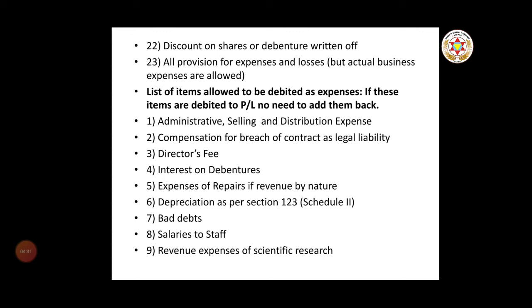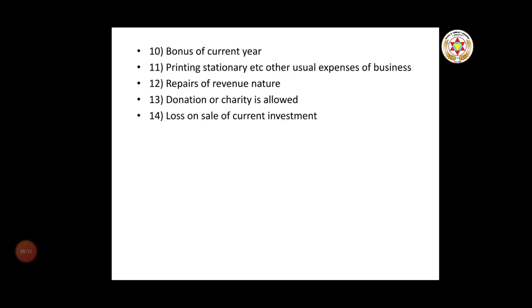Now the list of items allowed to be debited as expenses — if these items are debited to P&L, there is no need to add them back. These include: administrative, selling and distribution expenses; compensation for breach of contract as legal liability; director fee; interest on debentures; expenses of repairs if revenue by nature; debits to staff; revenue expenses of scientific research; bonus of current year; printing and stationery and other usual expenses of business; repairs of revenue nature; donation or charities allowed; loss on sale of current investment.